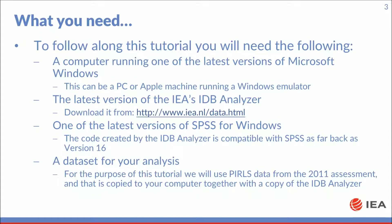To follow along this tutorial you will need the following: a computer running one of the latest versions of Microsoft Windows — this can be a PC or Apple machine running a Windows emulator — the latest version of the IDB analyzer, which can be downloaded from the IEA website, one of the latest versions of SPSS for Windows, and a data set for your analysis. For this tutorial we will use PIRLS data from the 2011 assessment, which was copied to your computer together with your copy of the IDB analyzer.